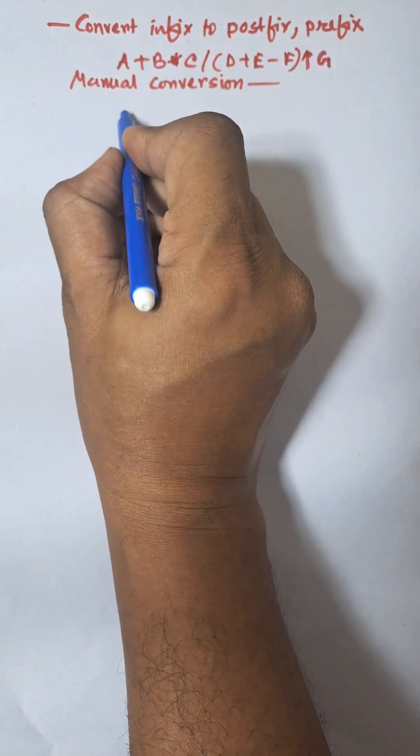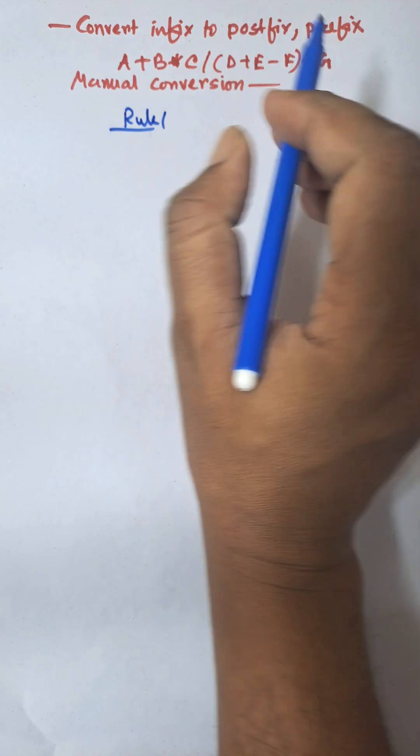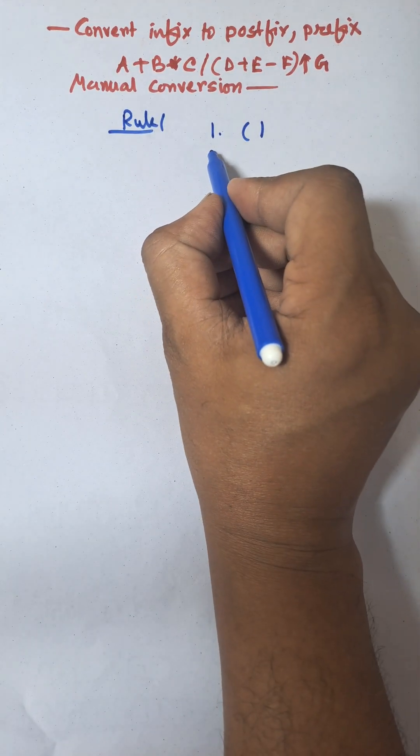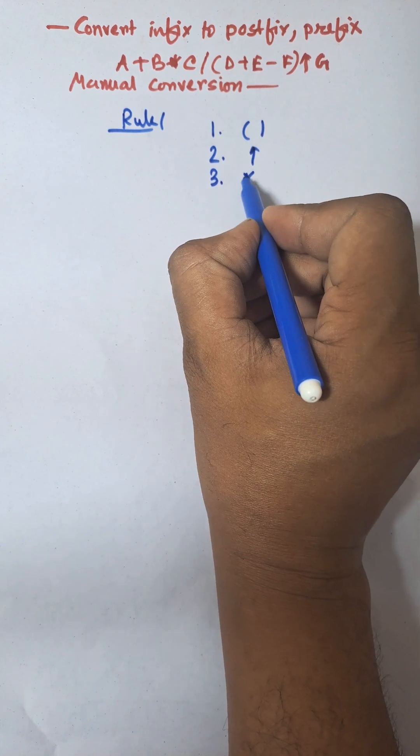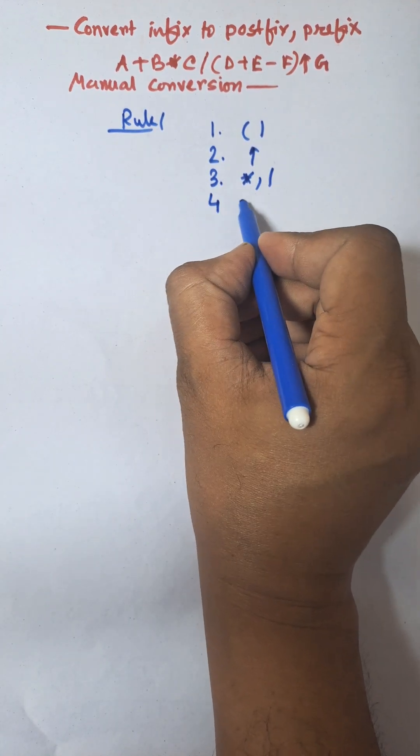First rule is rule 1. Priority of bracket is first, then exponential, then into and division, then plus or minus.